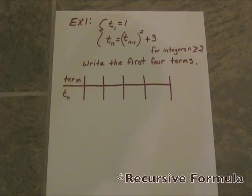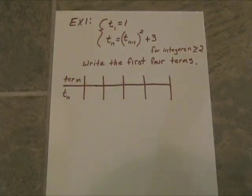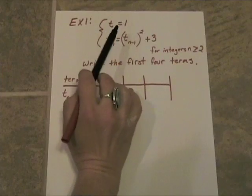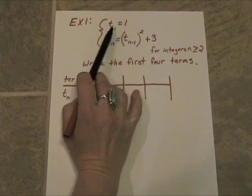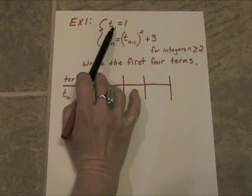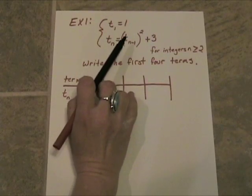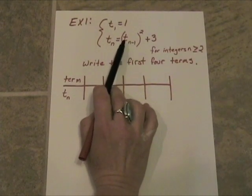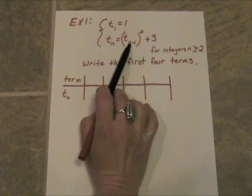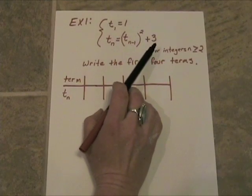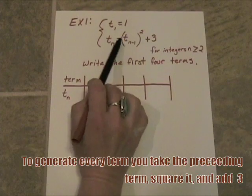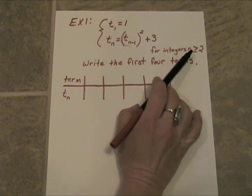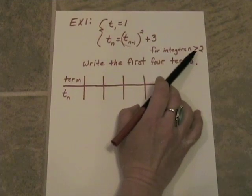Here's a recursive formula. Let's go ahead and see if we can generate the first four terms. Recursive formulas always have two parts. The first part is where you state the first term. So I'm going to use subscript notation here. t sub 1 is 1. And t sub n is then going to be equal to t sub n minus 1 squared plus 3. So to generate every term, you take the preceding term, you square it and you add 3. And of course this will be for integers where the number of term is greater than or equal to 2.